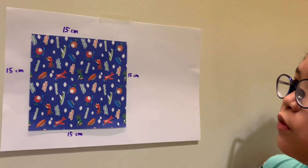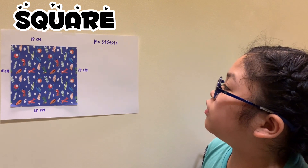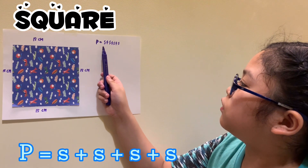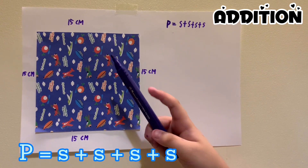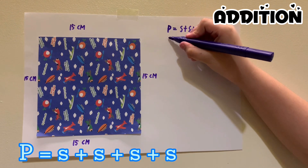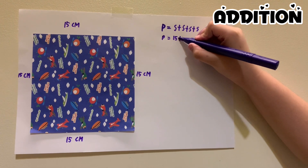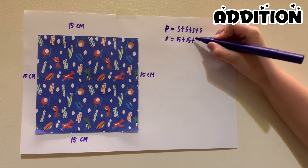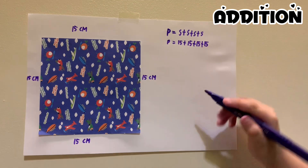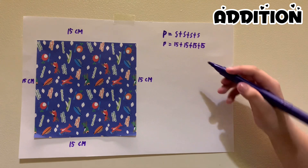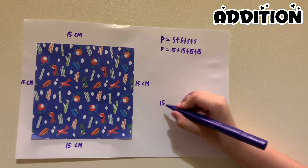Now that we're done measuring the sides, we will find the perimeter. The formula is P equals S plus S plus S plus S. We're going to apply that with 15 centimeters.